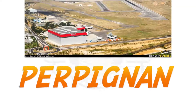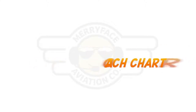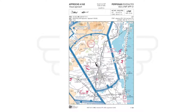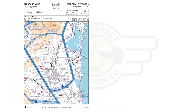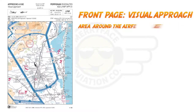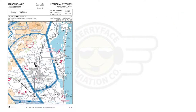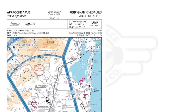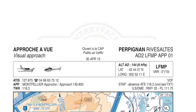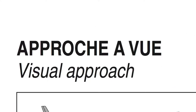Today we'll be looking at Perpignan, LFMP. Let's talk about the front page. The front page helps us understand the area around the airfield, helps us see how we should approach it, both physically and verbally when talking on the radio. The top of the chart is pretty much just a way to identify it. On the left you've got Visual Approach Chart — that tells us it's what we're looking for.